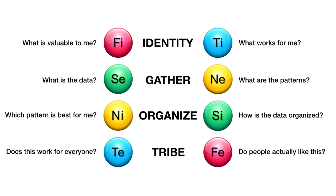Going through our function flow model — it's kind of a map that we use to track our way through reality, make sure we're not hitting any blind spots, which we all are going to do anyways. It just kind of helps you realize when you screwed things up, at least now I know I didn't do this function or this human need enough.